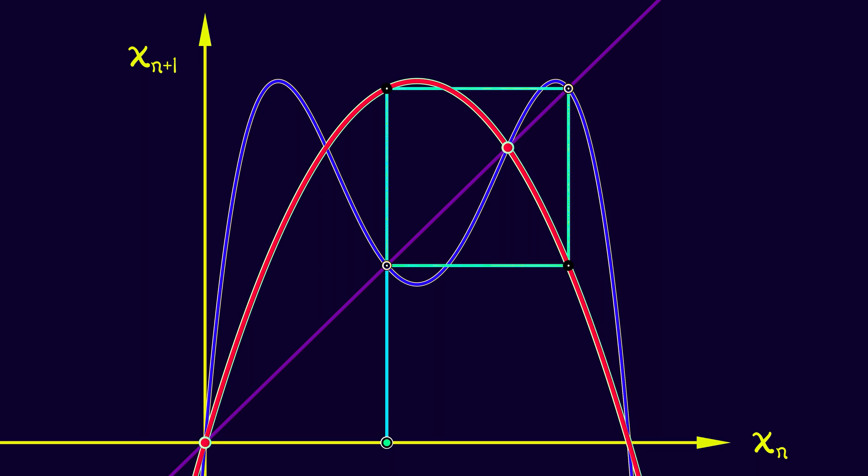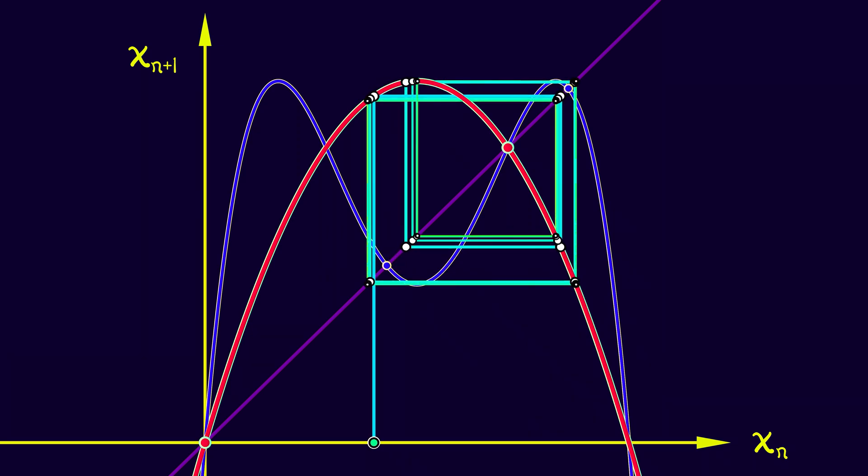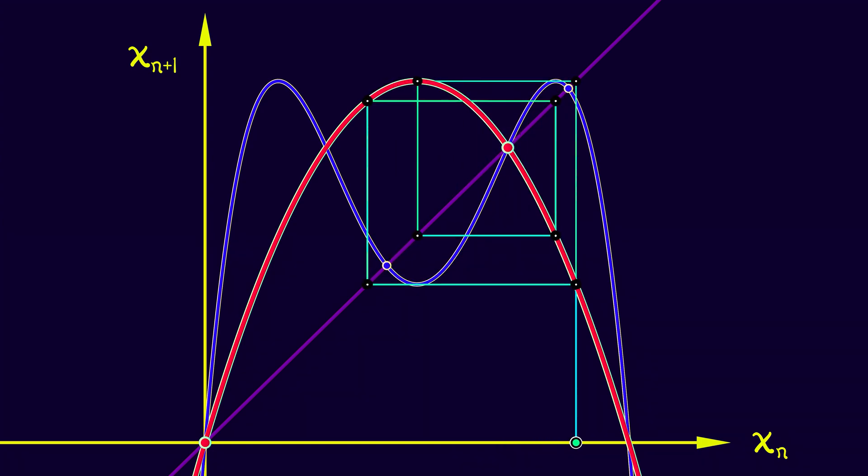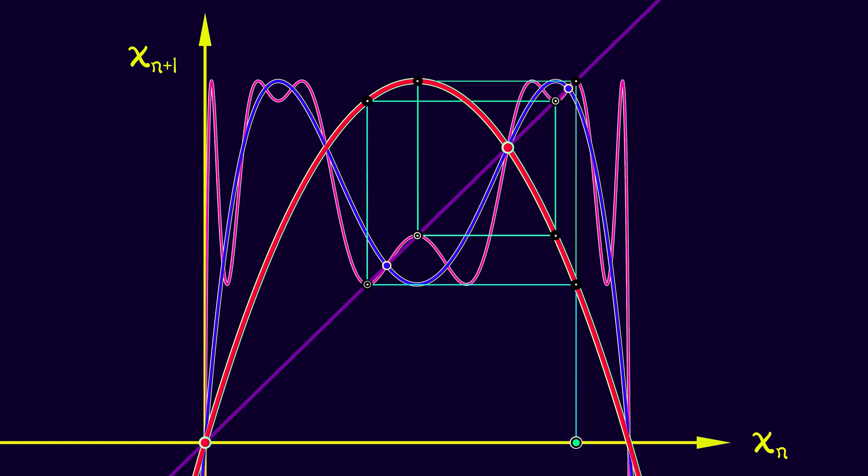Now, this is really cool because not only can we see that period 2 orbit, but if we move off of it, we can see that it is unstable and that one actually seems to be converging to a stable periodic orbit of period 4. I wonder what happens if we superimpose on top of this the fourth order composition, f composed with f, composed with f, composed with f.